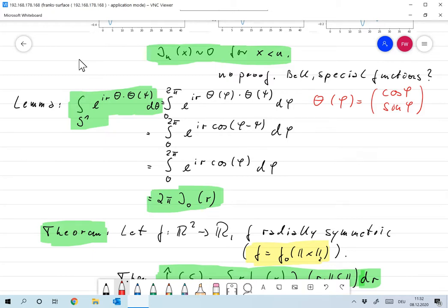And I want to start by computing this integral over here, integral over S1, so that's the surface of the unit circle. E to the IR theta times theta of psi d theta, where psi is fixed, and theta is a unit vector with angle psi with respect to the x-axis.